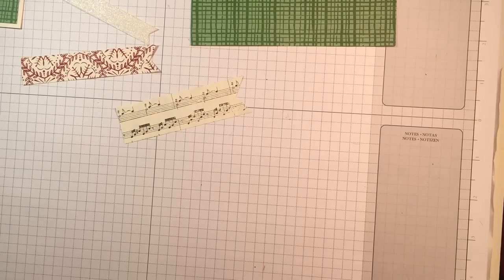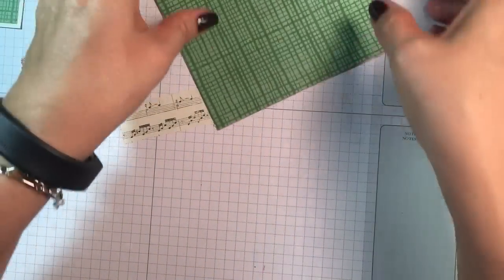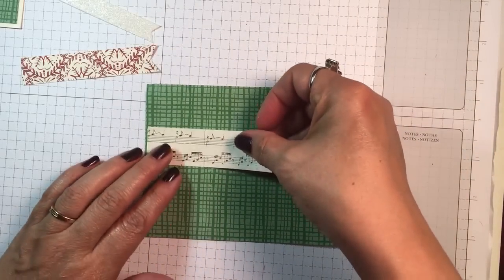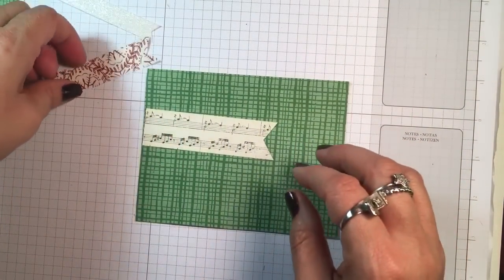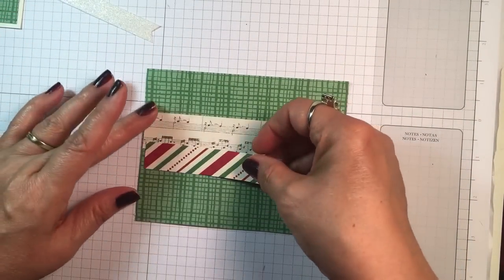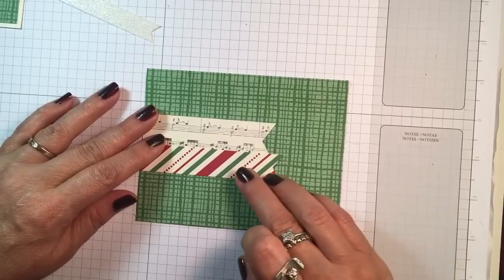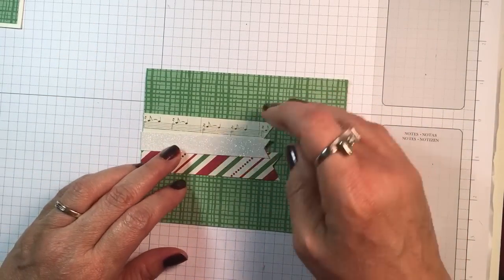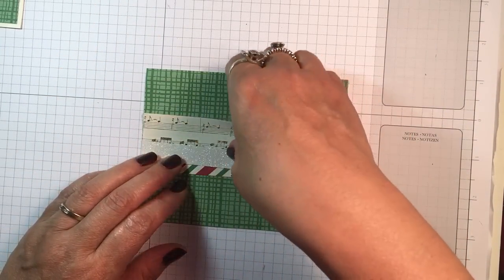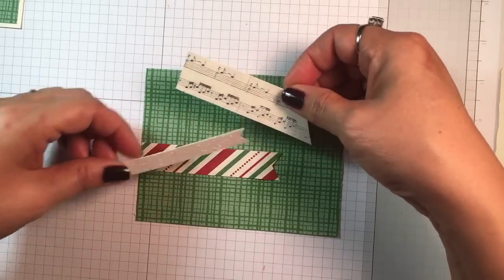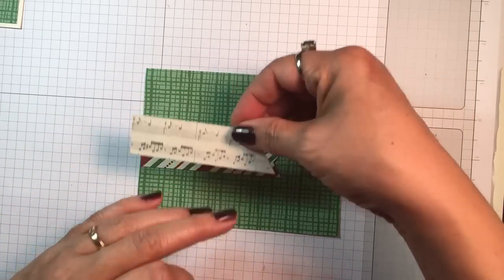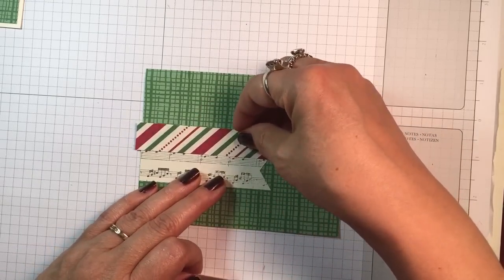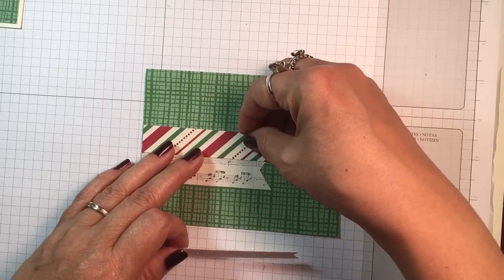Let's see what we can do next. I think we can go ahead and mount them on this designer paper. I just kind of play with it until I get it that's pleasing to the eye. I kind of overlap that. I like these music notes, so I think I'm going to switch and put that at the bottom since the majority of the notes are there.